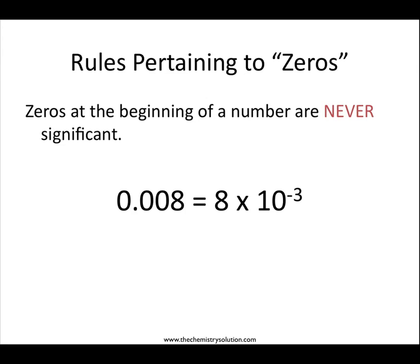Zeros at the beginning of a number, however, are never significant. Zeros at the beginning of a number are placeholders, and sometimes people get confused with this concept. If this seems confusing to you, think about writing out the number in scientific notation. You can see that we don't need to include any zeros at the beginning of the number, and therefore those zeros are just placeholders and not significant.